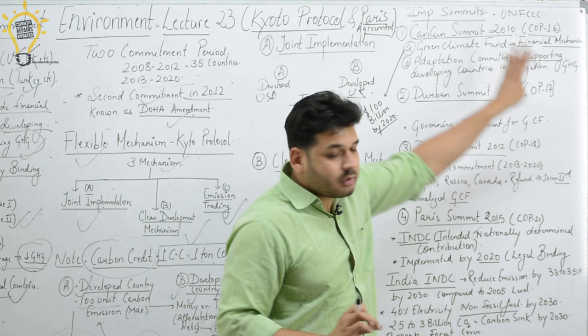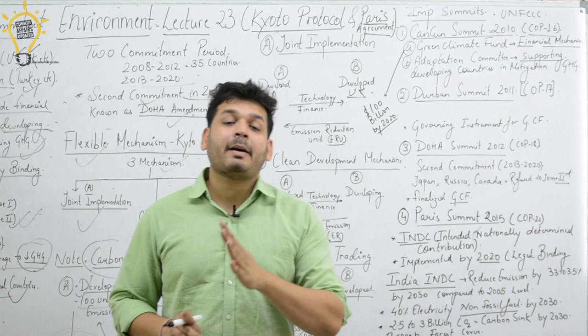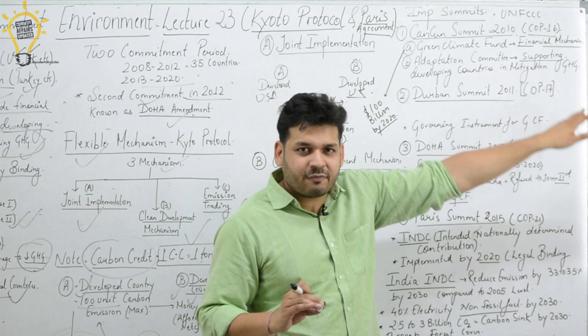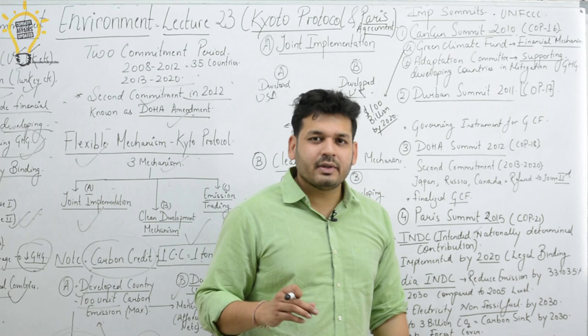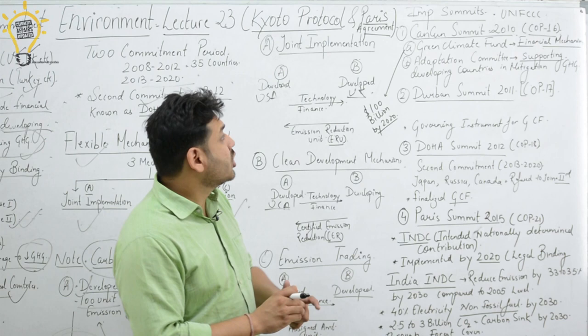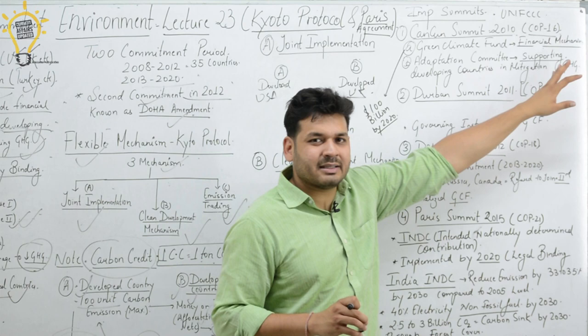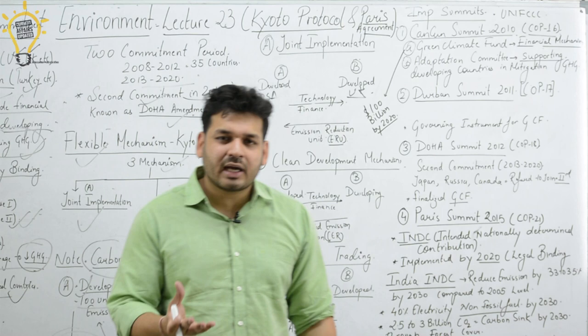Now let's look at important UNFCCC summits. COP16 was held in Cancun in 2010. It established the Green Climate Fund (GCF) and the Adaptation Committee. The Green Climate Fund is a financial mechanism to provide $100 billion by 2020 to help developing countries with climate finance, technology advancement, and energy for mitigation and adaptation of greenhouse gases.